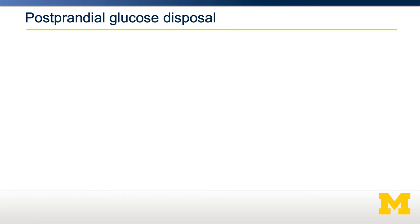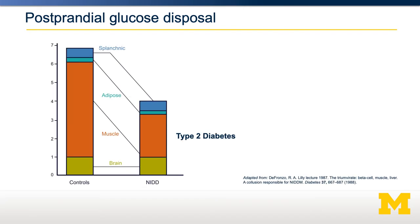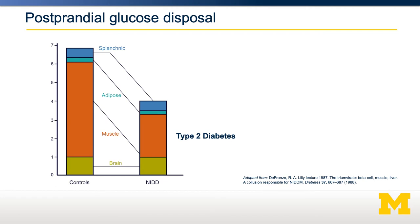If we follow what happens to glucose after a meal, you get a graph like the one shown here on the left. Focus in on the controls. What you can see is that after a meal, the vast majority of glucose is disposed of in skeletal muscle. Smaller amounts are disposed of in adipose tissue and in the brain. Critically, for somebody who has type 2 diabetes, it is the muscle glucose disposal that is the most attenuated. That means the inability to transport glucose into muscle is the cause of hyperglycemia after a meal.